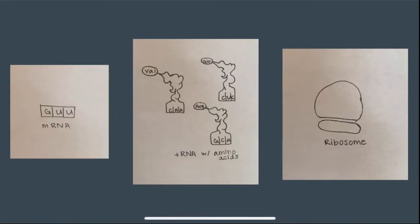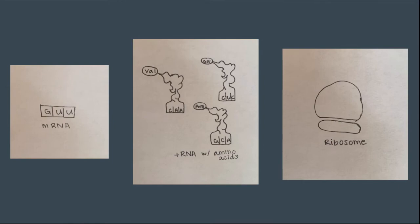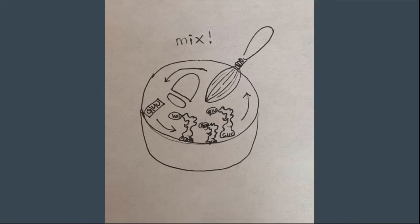In their experiment, Nirenberg and Leder synthesized short mRNAs that had all different codon combos, and then added them to a mixture of ribosomes and tRNAs that attached to the amino acids. The ribosome binds mRNA to their specific tRNAs.